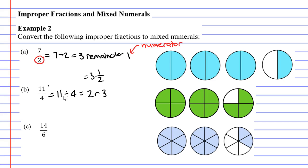Now we're going to write our mixed numeral. Our whole number will be 2, and our numerator will be 3. Remembering that our denominator was originally 4, so for our mixed numeral, our denominator will also be 4.